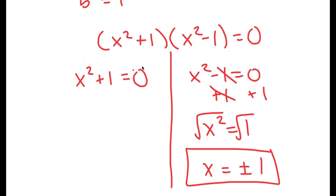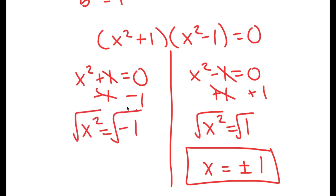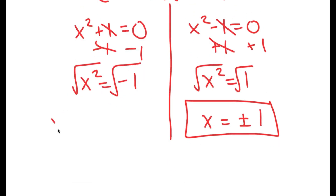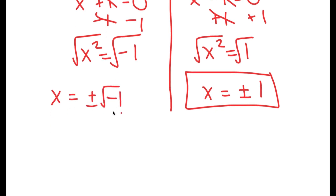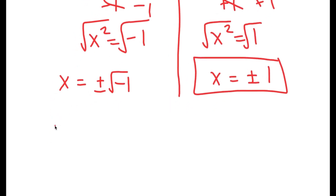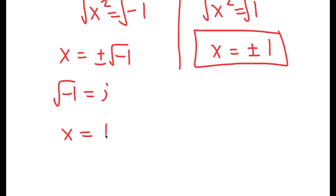For x squared plus 1 equals 0, I'm going to subtract 1 on both sides, so I get x squared is equal to negative 1. I'm going to again take the square root on both sides. This time I get x is equal to positive or negative the square root of negative 1. The square root of negative 1 is equal to i, so I get x is equal to positive or negative i.